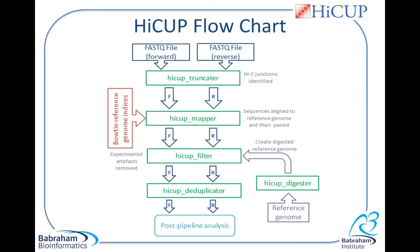The first step is the truncation step, performed by HICCUP truncator. This looks within each of the forward and reverse reads to identify the Hi-C ligation junction sequence, which I will discuss shortly. If this is encountered, the read is truncated at this point.